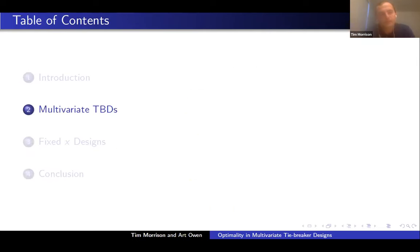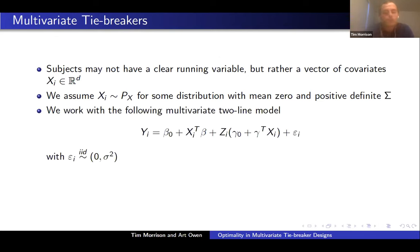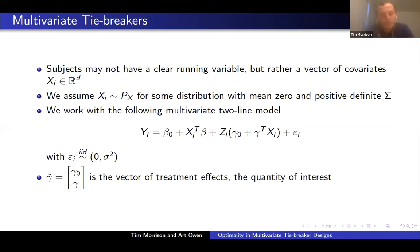Now I'll talk about our setting: multivariate tiebreakers. In many applications, there isn't a clear single running variable but rather a vector of covariates x sub i in R to the d. As before, we assume x sub i is from some distribution p sub x with mean 0, and we assume positive definite covariance. We work with the natural extension to the multivariate setting, where y sub i has an intercept for the treated and an intercept for the control and different slope coefficients for treatment and control, and epsilon sub i is homoscedastic IID. Our quantity of interest — now a vector — is gamma tilde, which is gamma 0, gamma: the vector of treatment effects. I use a tilde to denote sticking the intercept inside.